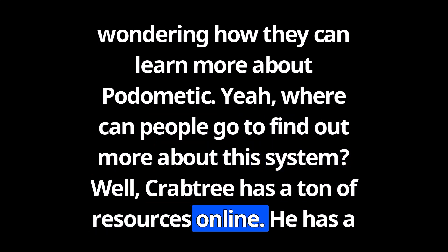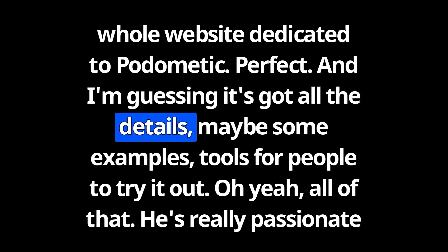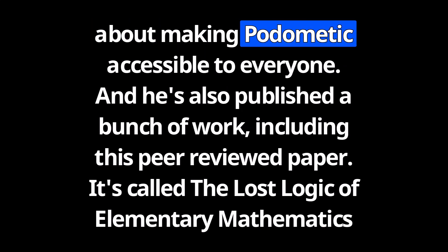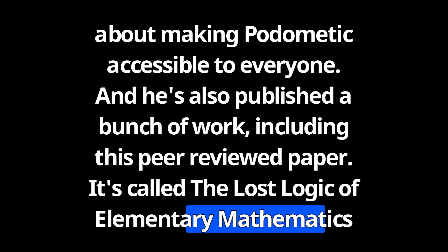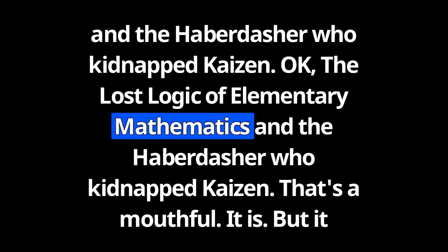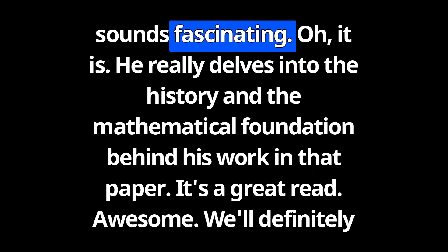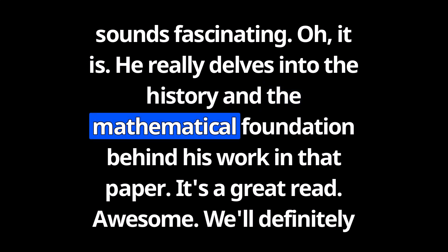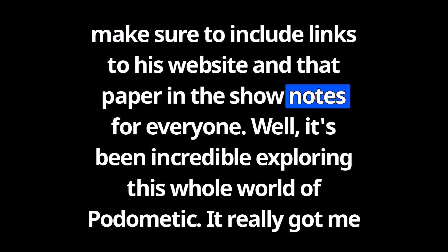Crabtree's story is pretty inspiring — he first noticed those inconsistencies in traditional multiplication when he was just seven years old, and he's been working on Podomedic, refining and sharing it with the world for years. He's also published a peer-reviewed paper called "The Lost Logic of Elementary Mathematics and the Haberdasher Who Kidnapped Kaizen," which really delves into the history and mathematical foundation behind his work. We'll definitely include links to his website and that paper in the show notes.